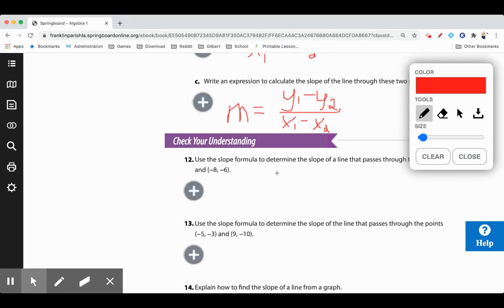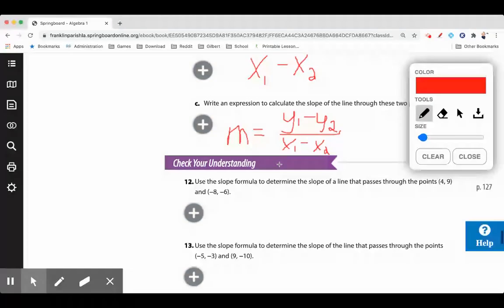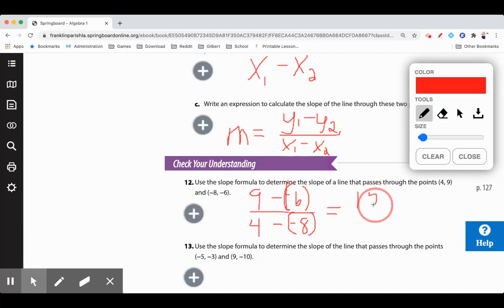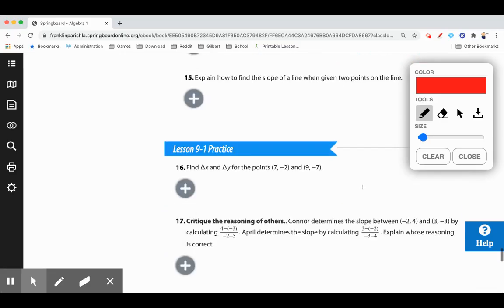Let's use that formula to determine the slope of a line that passes through the points 4, 9 and negative 8, negative 6. y1 minus y2. So our first y is 9 minus our second y, which is negative 6, over our first x is 4 minus our second x, which is negative 8. And so 9 minus negative 6, well, that's 9 plus 6, that's 15. 4 minus negative 8, well, that's 4 plus 8, that's 12. 15 twelfths. Or I could reduce that by 3 and say 5 fourths. That is our slope. So we go up 5 over 4.